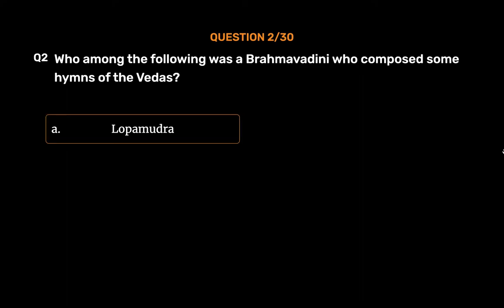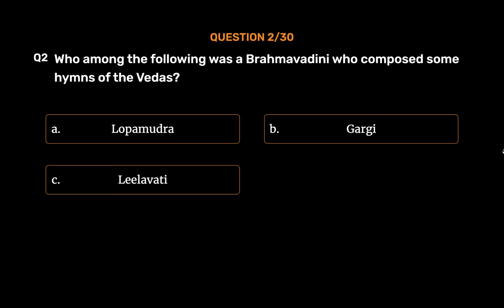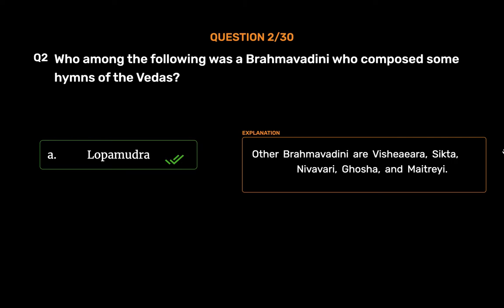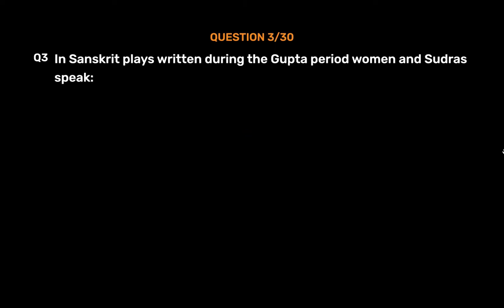Question number two: Who among the following was a Brahma Vadini who composed some hymns of the Vedas? Option A: Lopamudra, Option B: Gargi, Option C: Lilavati, Option D: Savitri. The correct answer is Option A, Lopamudra. Other Brahma Vadinis are Vishayara, Sikta, Nivavari, Ghosa, and Maitrei.